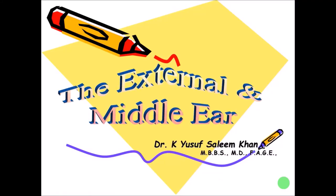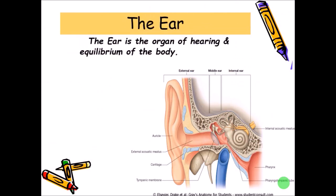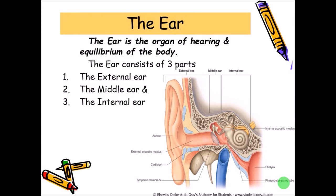In this video we will study about the ear, mainly the external and middle ear. The ear is a very important organ for hearing as well as it helps in the equilibrium and erect posture of the body. The ear is divided into three parts: the external ear, the middle ear, and the internal ear. We will study the external and middle ear here; the internal ear is a separate lecture.